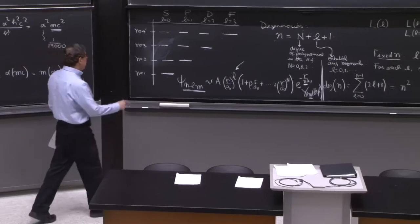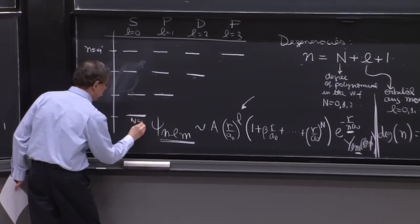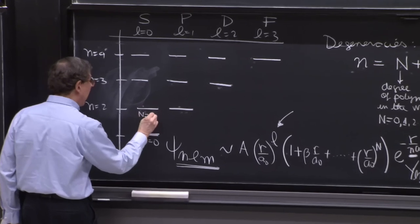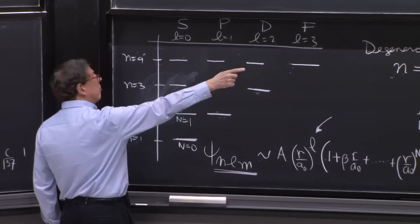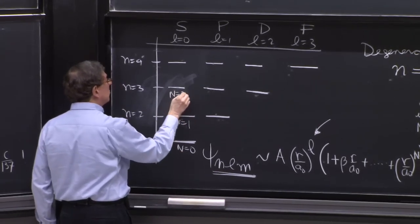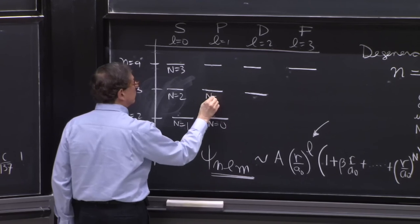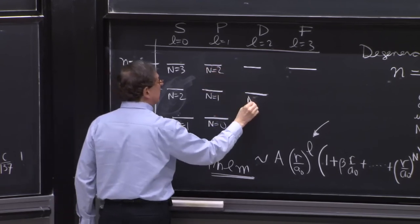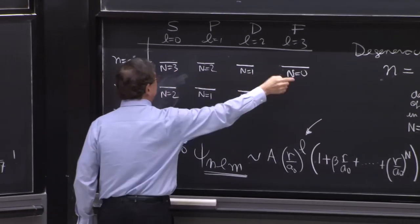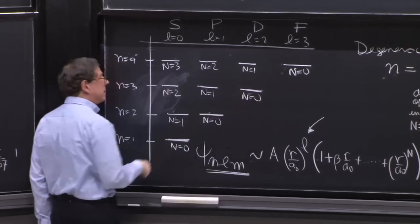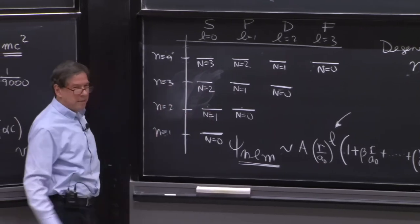In particular, here you have a state with l equals 0, n equals 1. So this must have N equals 0. This must have N equals 1 because you must get to 2 with a capital N, and l equals 0, and a 1 there. So this is N equal 1. This would be N equal 2, N equal 3. Similarly here, N equals 0, N equals 1, N equals 2. The N's decrease in this direction as l increases, keeping the sum of capital N and l constant and equal to little n minus 1.